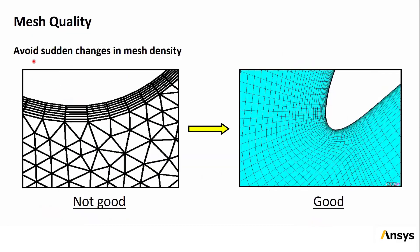Sudden changes in mesh density should be avoided in important regions of the flow. The right-hand image on this slide shows a good quality grid where the mesh size is growing, but the growth is gradual and continuous. On the left, tet meshes with inflation layers are generally okay, but here there are only a few layers and then a huge jump in size to the first tet cell. If you're interested in resolving the boundary layer, there should ideally be more inflation layers and a much smaller jump in size between the last layer and the first tetrahedral cell. However, there could be situations where the mesh on the left is good enough if the highlighted region is not of primary importance for the overall simulation.